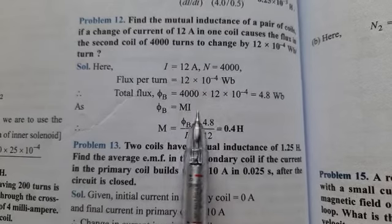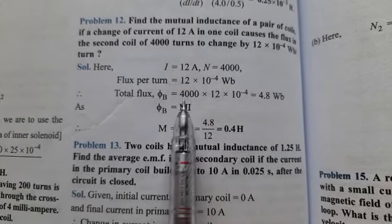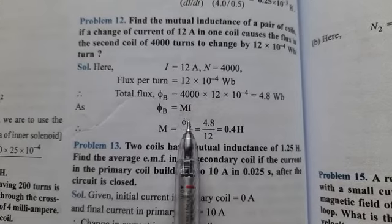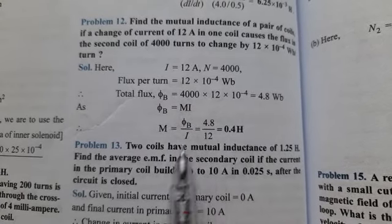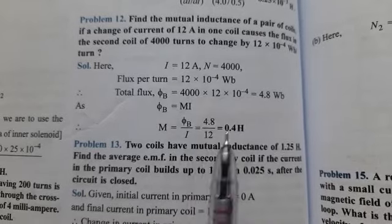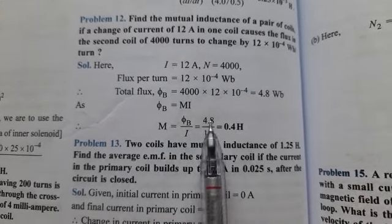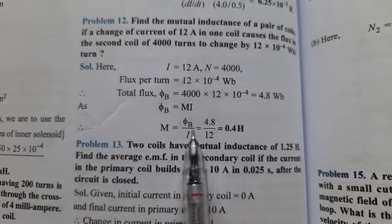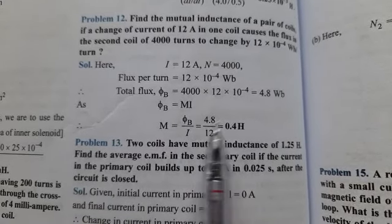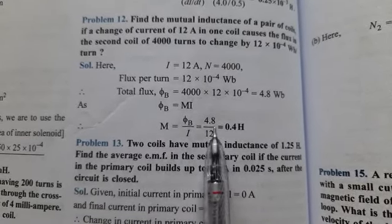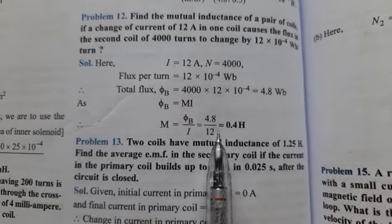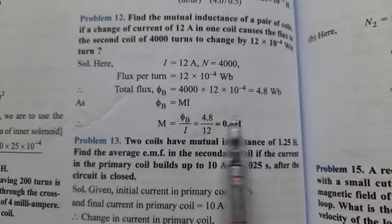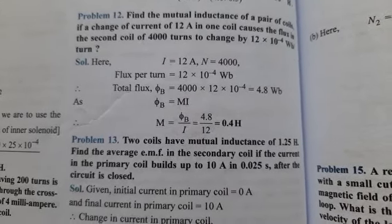Mutual inductance M equals flux divided by current. So 4.8 divided by 12 ampere. When we solve and take the decimal, we get 0.4 henry. Henry is the unit of mutual inductance.